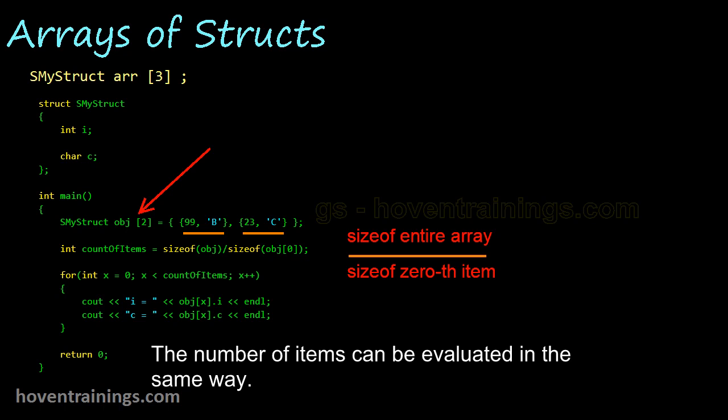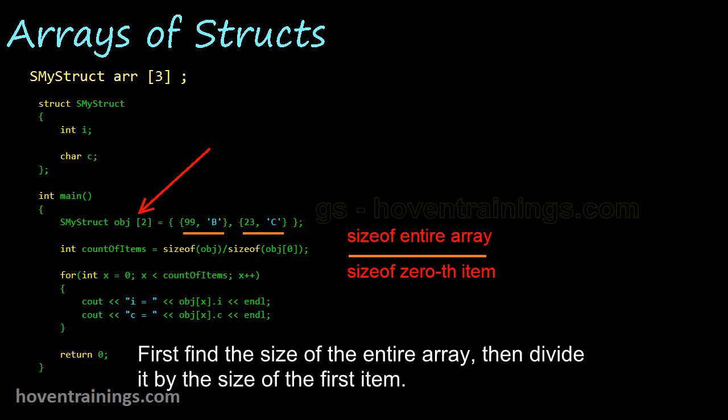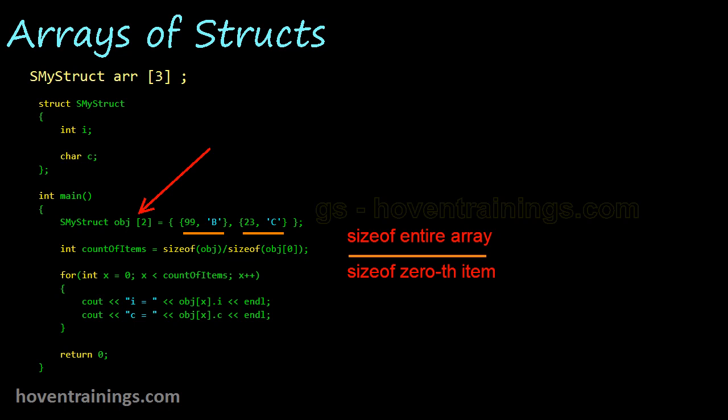The number of items can be evaluated in the same way. First find the size of the entire array, then divide it by the size of the first item. This loop runs over all the items of the array. Each item is displayed by using the dot operator.